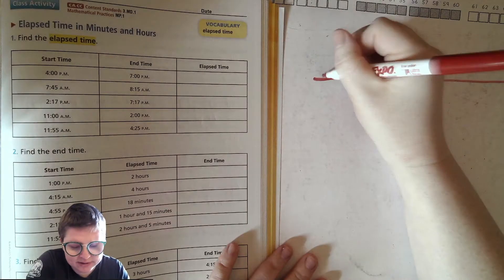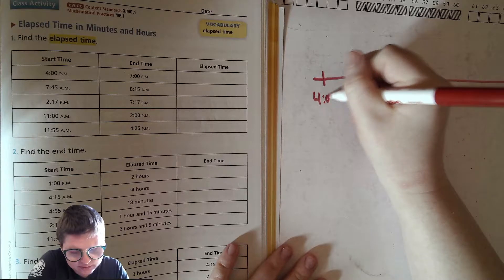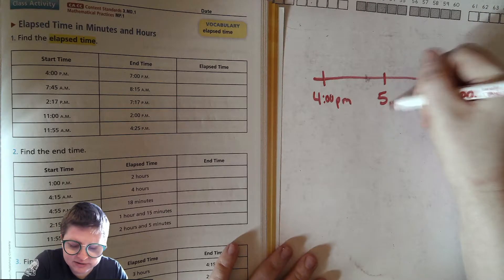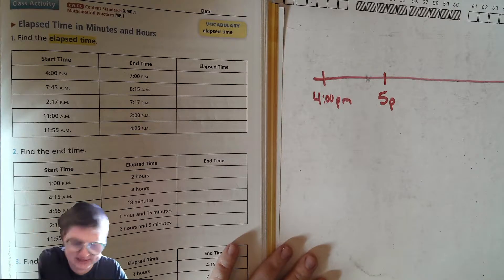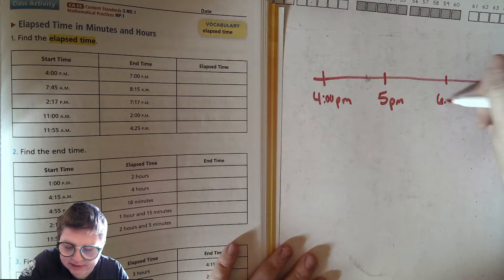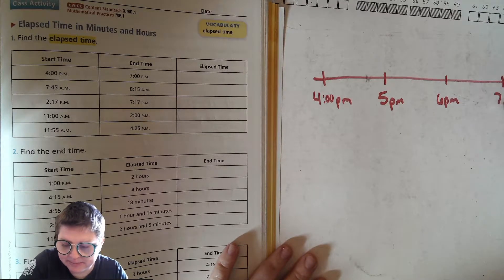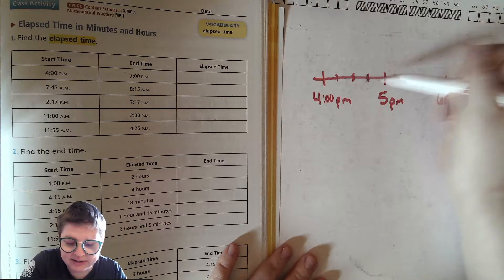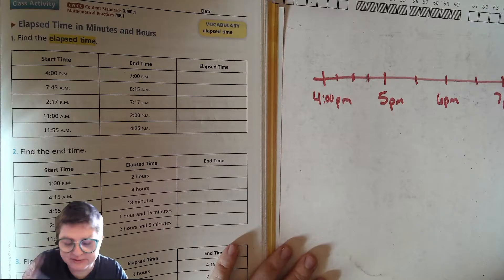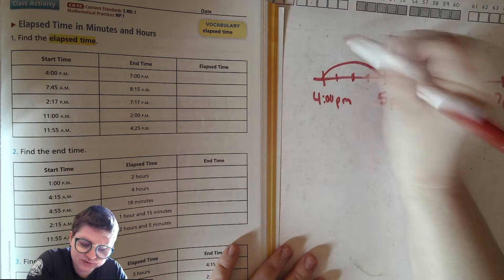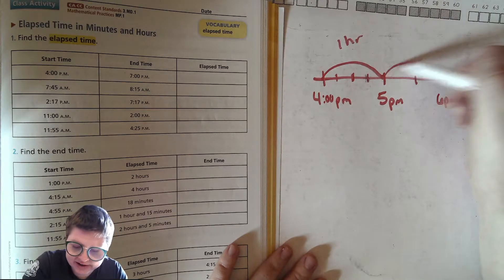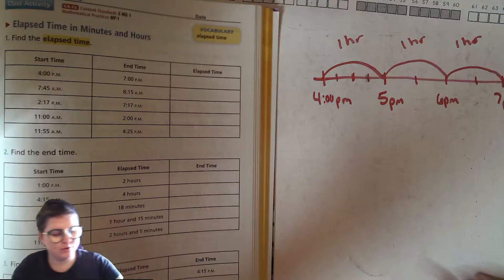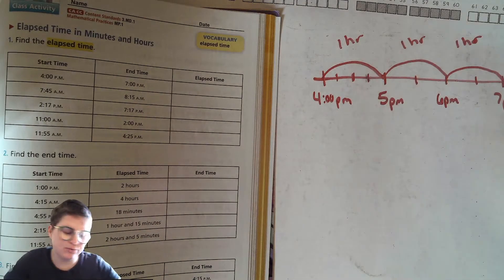For this first one, we're going to put 4 PM on our number line, then 5 PM, because we're trying to figure out how far it is from 4 o'clock to 7 o'clock. So 5 PM, 6 PM, and 7 PM — I try to space those evenly. From 4 to 5 is one hour, from 5 to 6 is one hour, and from 6 to 7 is another hour. So from 4 PM to 7 PM is one, two, three — three hours.